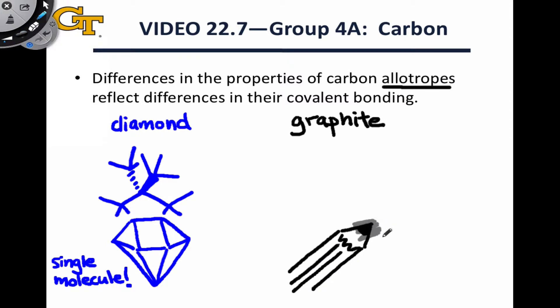Graphite, an allotrope of carbon found in pencil lead, has a very different structure in which carbons are arranged into completely flat, completely planar sheets in arrays of bonds. They form six-membered ring structures with a carbon at each vertex, and these sheets actually stack on top of one another to form the macroscopic structure of graphite.